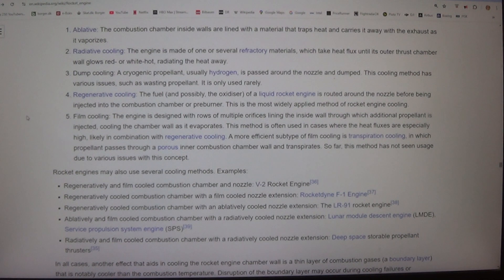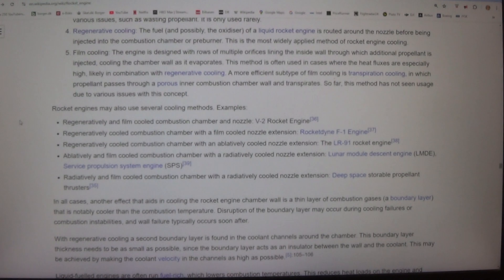Four, regenerative cooling - the fuel, and possibly the oxidizer, of a liquid rocket engine is routed around the nozzle before being injected into the combustion chamber or pre-burner. This is the most widely applied method of rocket engine cooling.